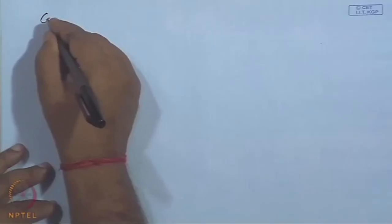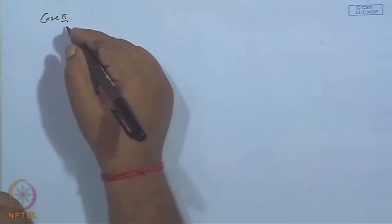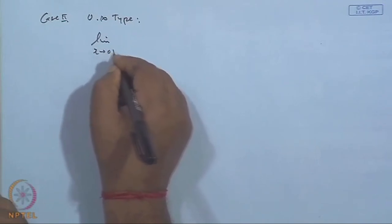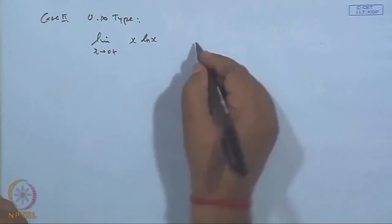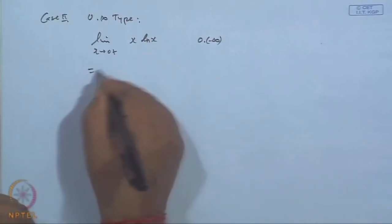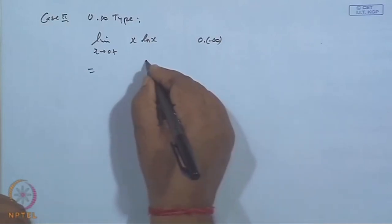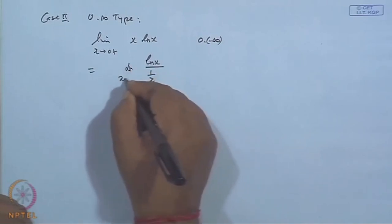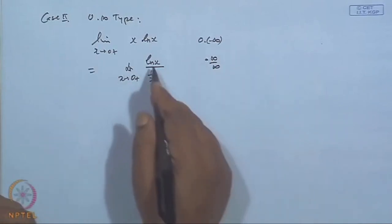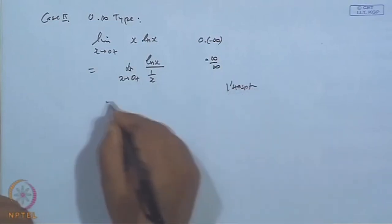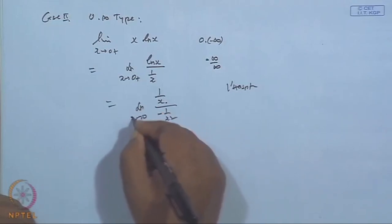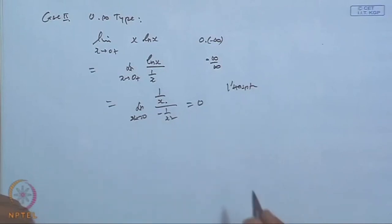Case 2: 0·∞ type. Suppose I take the limit of x·ln(x) as x→0⁺. When x→0, it is 0·(−∞), which is 0·∞ type. We rewrite it as ln(x) / (1/x) as x→0⁺, which is ∞/∞ type. Apply L'Hôpital's rule: differentiate numerator (1/x) and denominator (−1/x²). This gives −x, whose limit as x→0⁺ is 0.